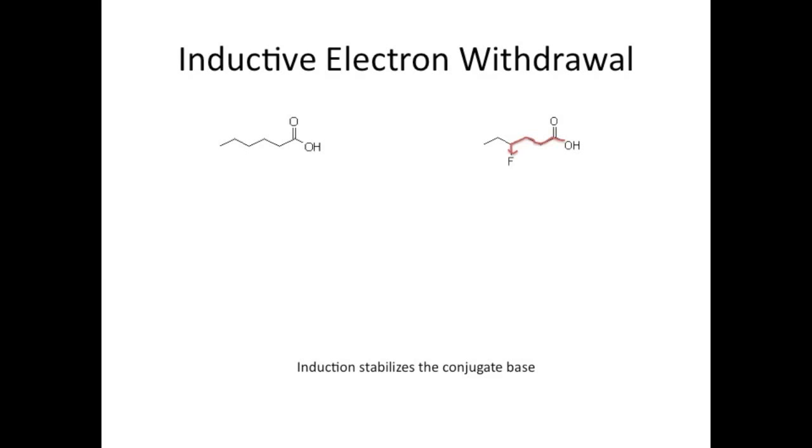So, there are some different cases of induction I'll discuss. First of all, how close the halogen is to the proton matters. The closer it is, the more of a pull it can exert. So, the one on the left is more acidic because its fluorine is one carbon closer.